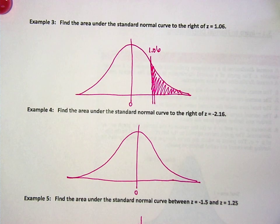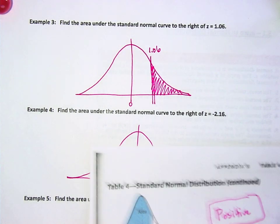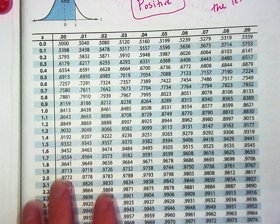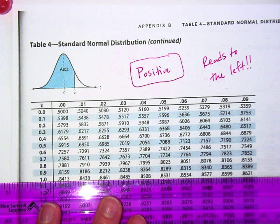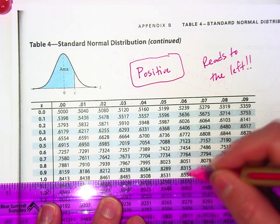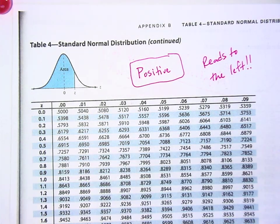Alright, ideas what should we do? Because the chart reads to the left. Okay, so we'll find 1.06. We're starting on the positive side, 1.0, everybody with me? Now 1.06, that is 0.8554.